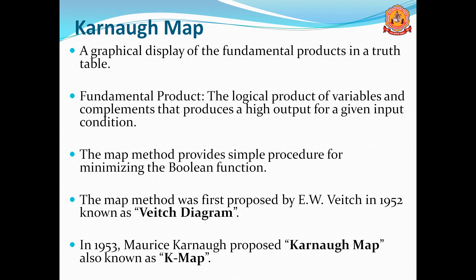The first map method was proposed by E.W. Veitch in 1952, known as the Veitch diagram. Then in 1953, Karnaugh proposed the Karnaugh map, also known as the K-map.